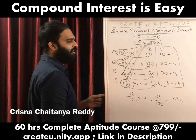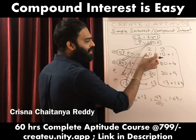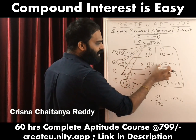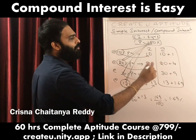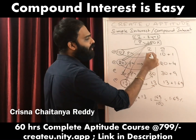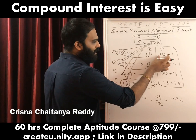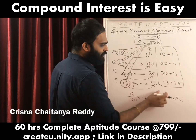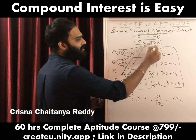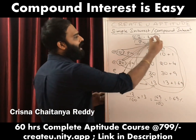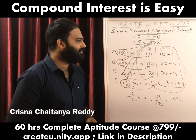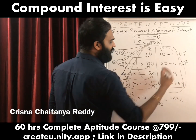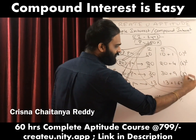So what you have to understand is: whenever you go for the second year calculation, the first year's interest is always paid again — 10, 10; 20, 20; 30, 30; 13, 13. The extra interest is generated on the previous year's interest. So the total CI for 2 years at 10% is 10 + 10 + 1²; at 20% it's 20 + 20 + 2²; at 30% it's 30 + 30 + 3²; and at 13% it's 13 + 13 + 1.3².